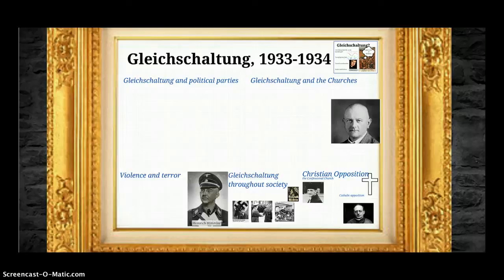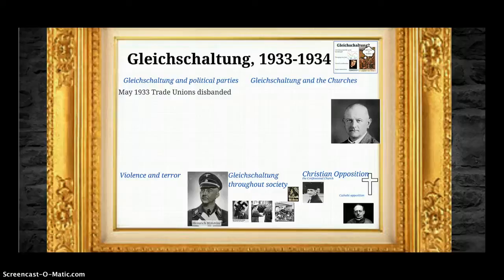With political parties: in May of 1933, the trade unions were disbanded. The trade unions were associated with the Social Democrats on the left wing and were opposed to what the Nazis were doing. They offered an alternative culture in terms of sports clubs and after-work activities, and they definitely represented a challenge to the Nazi way of thinking. They were disbanded in May of 1933.